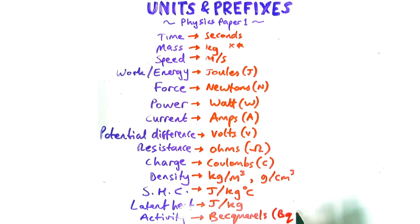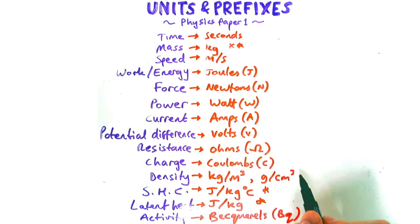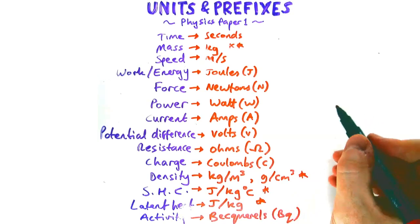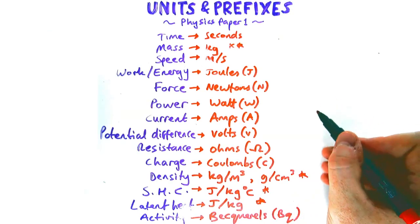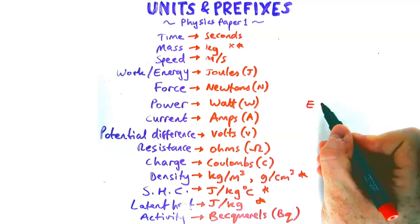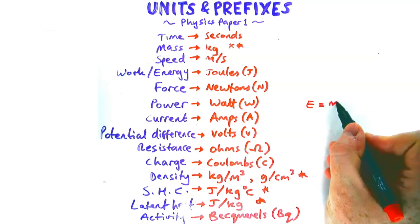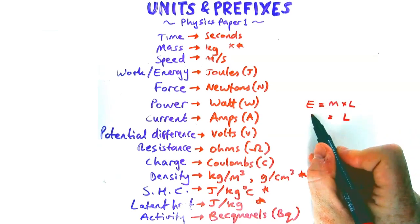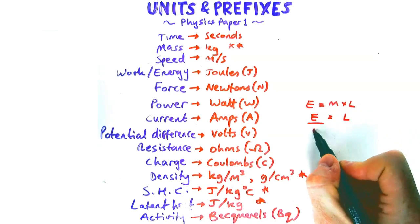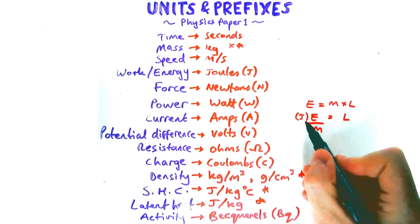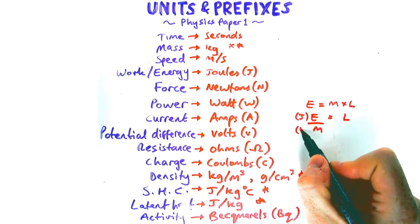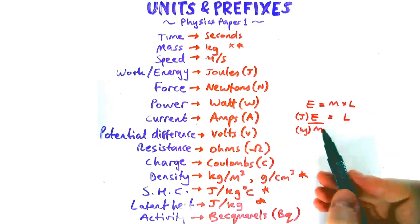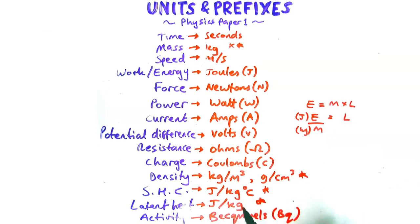For these equations, if you ever forget their units, you can use the equation to work it out. For example, if you know latent heat, the equation is E equals m times L. Rearrange it for L, which gives E divided by m. E is energy in joules, m is in kg, so therefore it's joules per kilogram, which matches what's shown here.